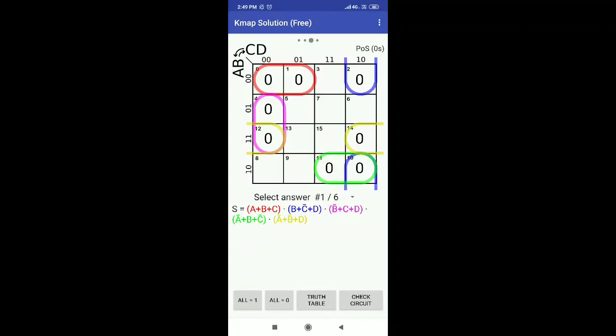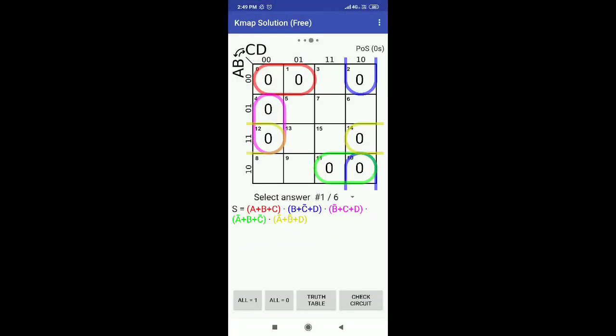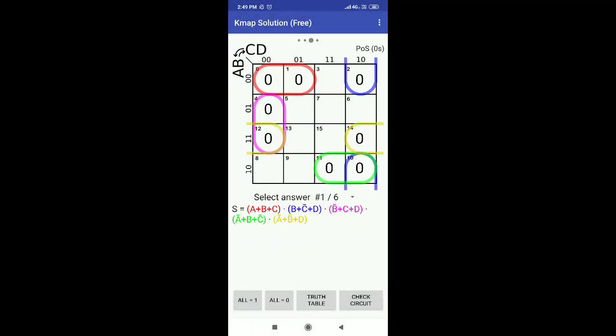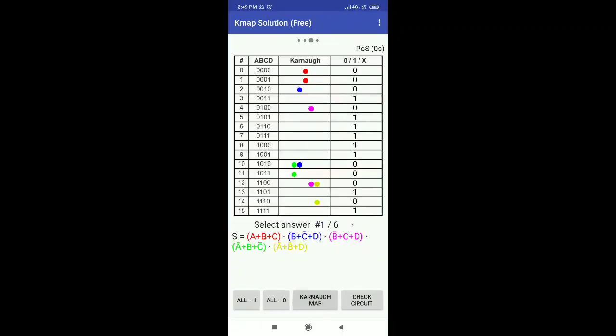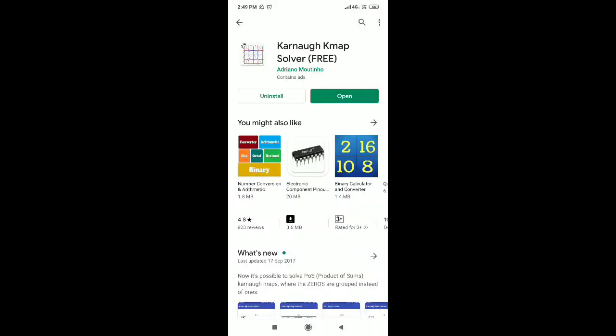You can check the circuit how it will look like by clicking on the option given for circuit. This is how the circuit will look like. If you want to see the truth table also, you can click on the third option on bottom of your screen. This is the truth table for those values you have filled in the K-map. Thank you.